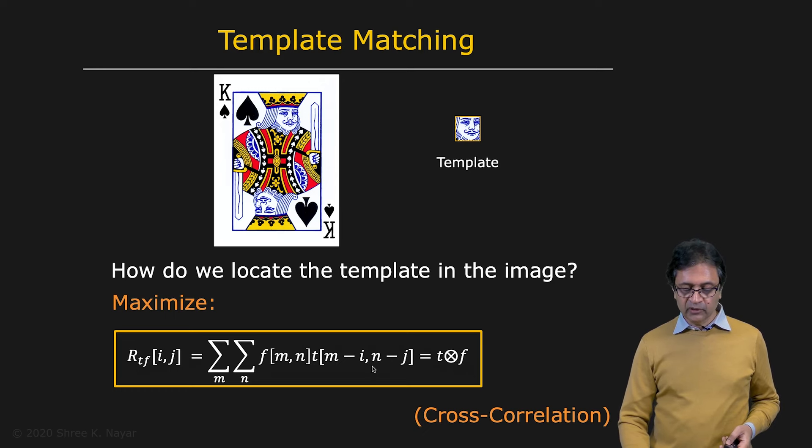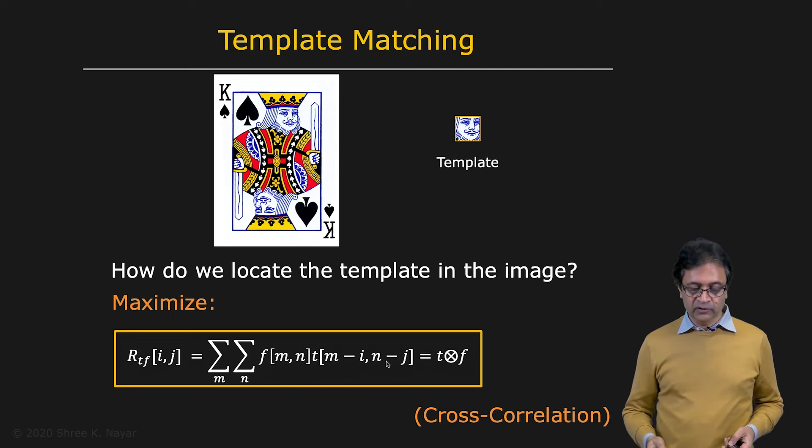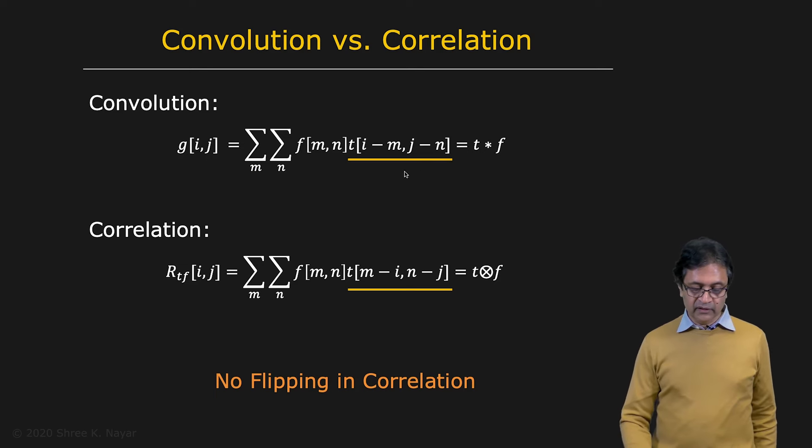You can see when you look at this expression right here, you're already seeing that it looks a lot like a convolution. So let's take a look at the two together. Convolution is this expression right here, T convolved with f or f convolved with t. Cross correlation is this. And the only difference between these two expressions is it's i minus m and j minus n here, whereas it's m minus i and n minus j here. So in other words, in the case of correlation, there is no flip.